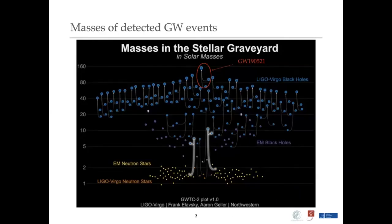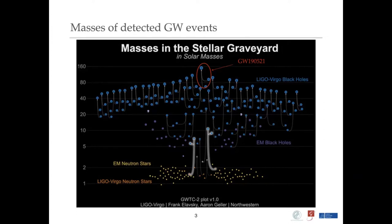Till date, from the three observing runs of the LIGO-Virgo detectors, there have been detections of about 94 compact binary mergers. Here I've shown all the detections from the first, second, and first half of the third observing run as a function of their masses. There were detections of two binary neutron stars as well as two black hole–neutron star events. The most massive detection till date is GW190521, with a remnant mass of about 150 to 160 solar masses.